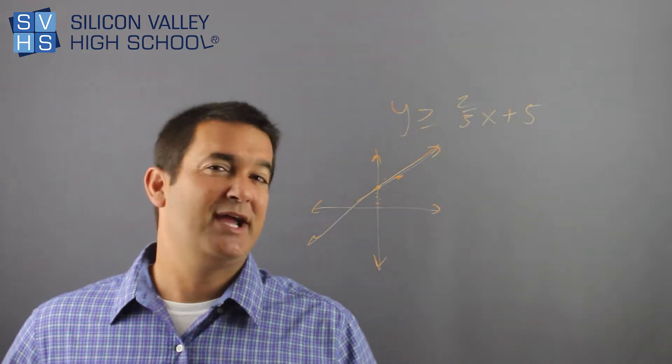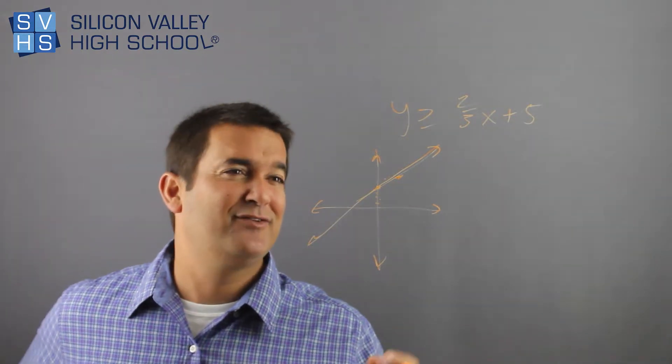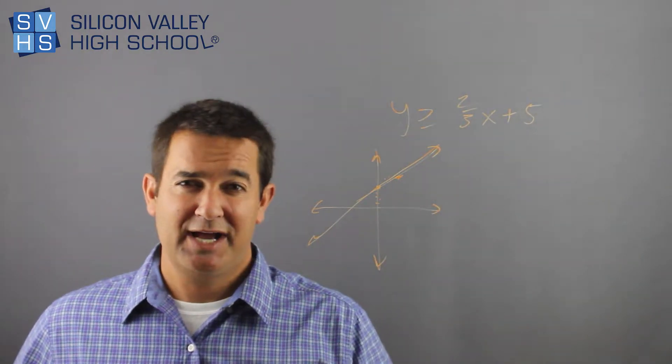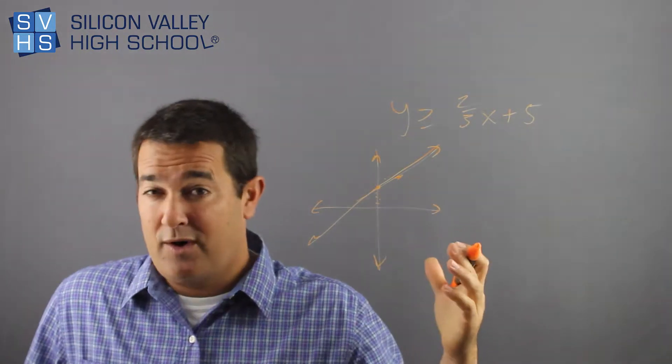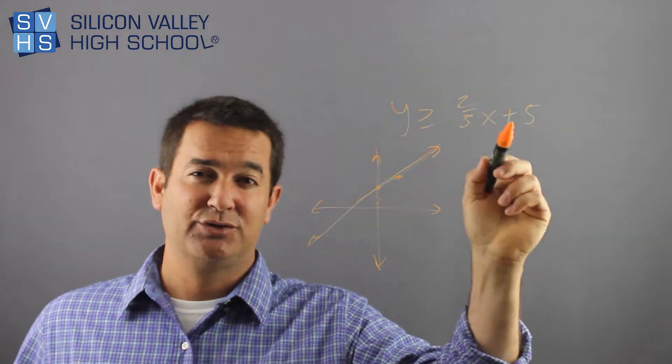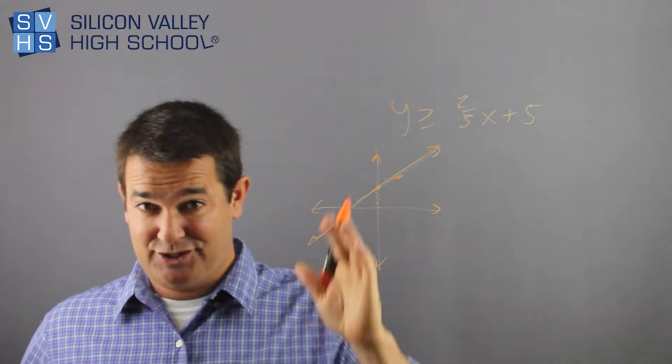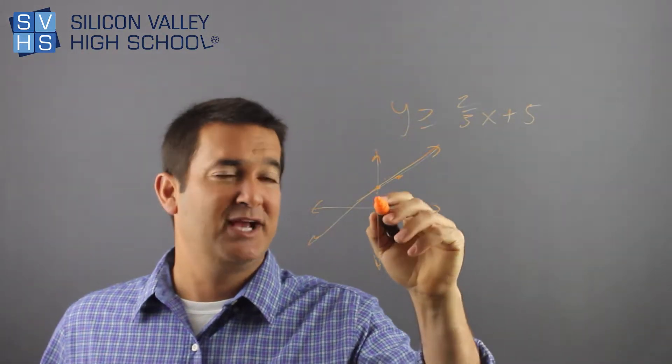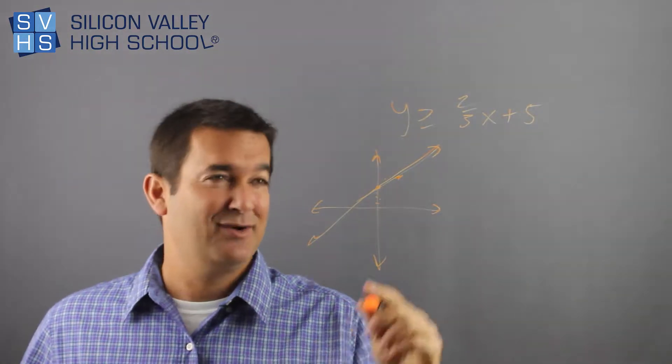Now this is where the shading thing comes in, and you'll hear from other teachers and some other math nerds, the way to do it is to check any point below or any point above. And if that point makes a true statement in this inequality, then you shade that side of it. Example. Zero, zero right here. I'm going to check zero, zero and see if that's correct.